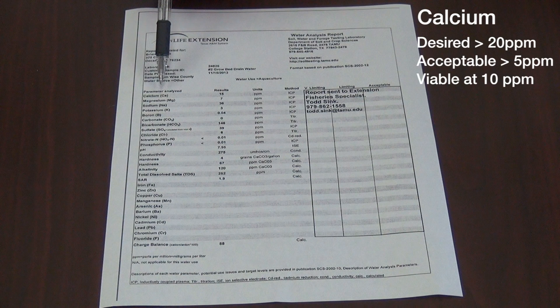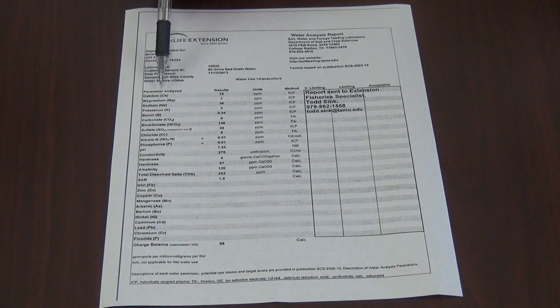The desired range for calcium is more than 20 milligrams per liter or parts per million. The acceptable range is more than five parts per million. Often, we like to see at least 10 parts per million before it can be considered a viable fishery. If it does not have at least five parts per million, then amendments will need to be made to your water, such as the addition of calcic agricultural lime. Calcium is an essential element for fish osmoregulation, skeletal and scale formation, and is also critical for egg and larval development. Poor levels of calcium can impede proper development of offspring, ultimately resulting in poor offspring recruitment for the fishery.